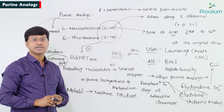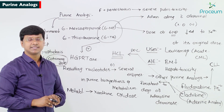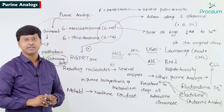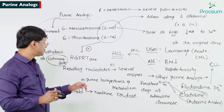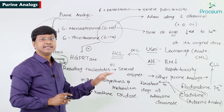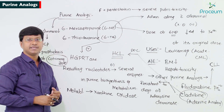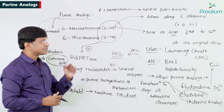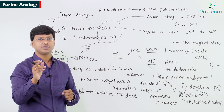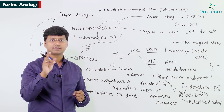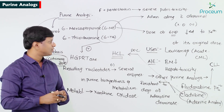In summary: 6-mercaptopurine and 6-thioguanine are activated by HGPRTase. The resulting nucleotides inhibit several enzymes in purine biosynthesis and metabolism. 6-mercaptopurine is metabolized by xanthine oxidase, and when administered with allopurinol — a xanthine oxidase inhibitor — its dose should be reduced to one-fourth of the original dose.